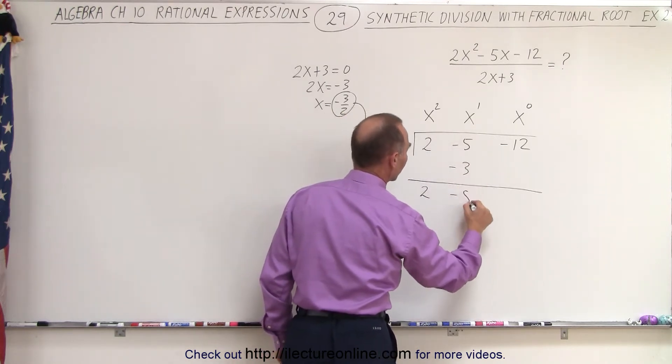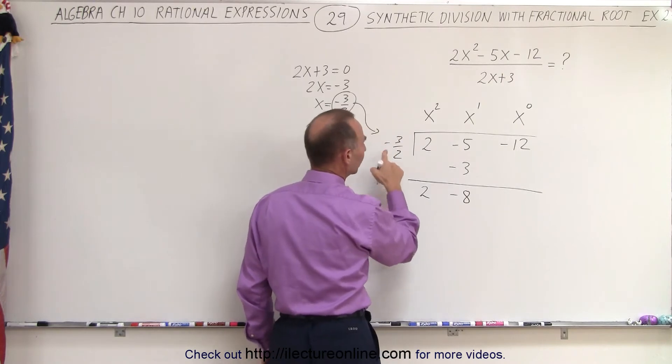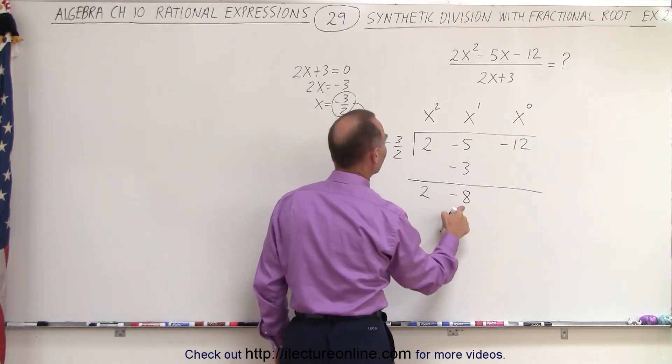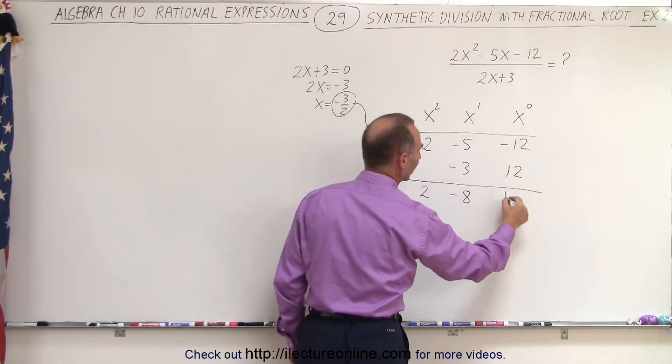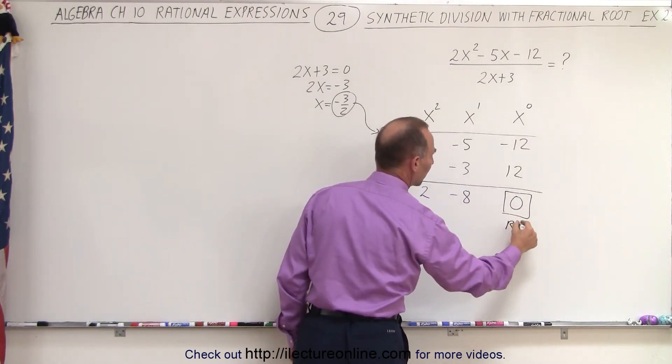We add those together, that gives us a minus 8. Minus 3 over 2 times minus 8, that gives us a positive 12. We add those together, we get 0, which means we get a 0 remainder.